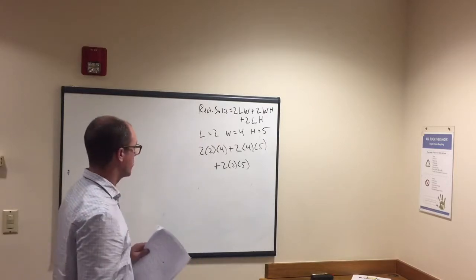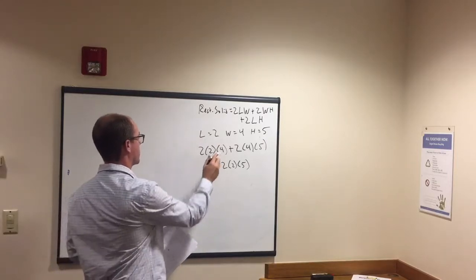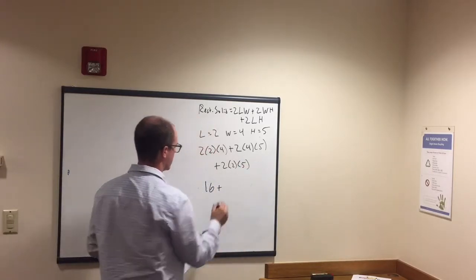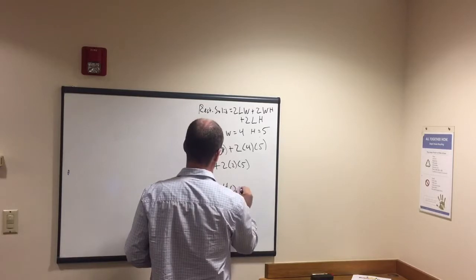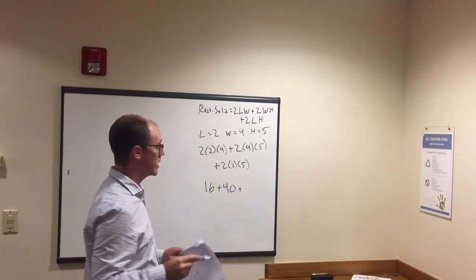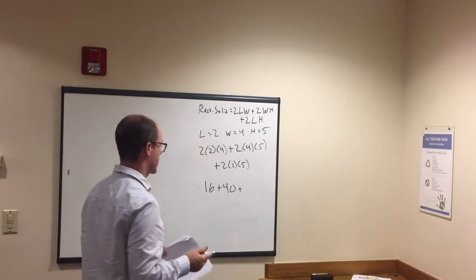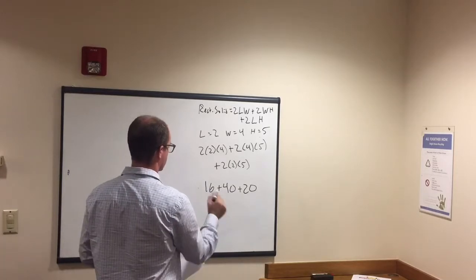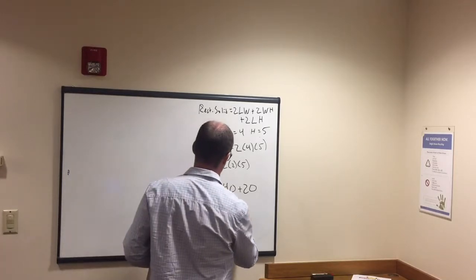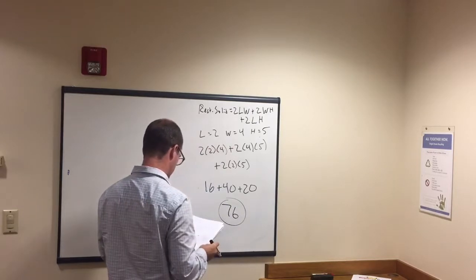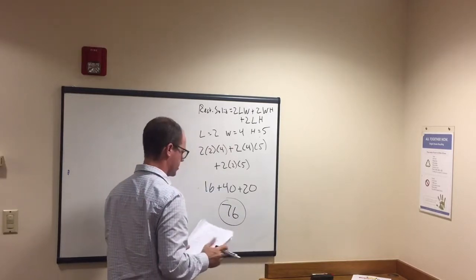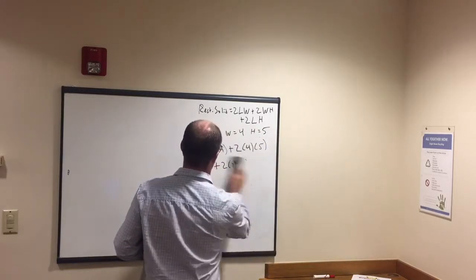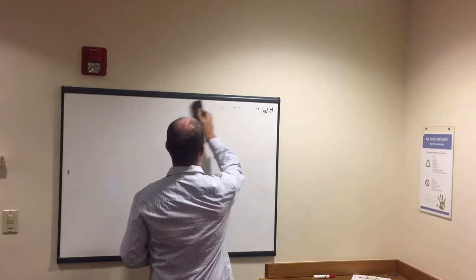Okay, now we just need to multiply and then add. So 2 times 4 is 8, times 2, that's 16. 5 times 4 is 20, times 2, that's 40. 5 times 2 is 10, times 2, that's 20. We add these together, 40 and 20 makes 60, 60 plus 16, 76. That's the right answer. So that was rectangular solid.